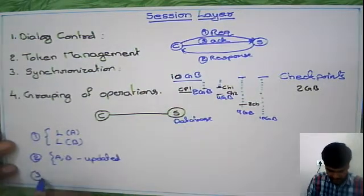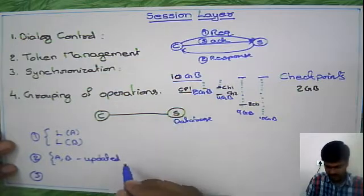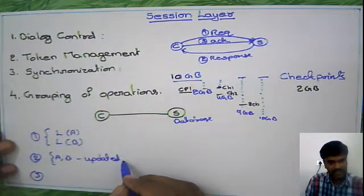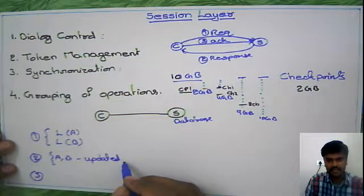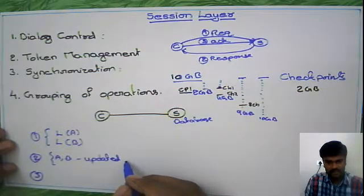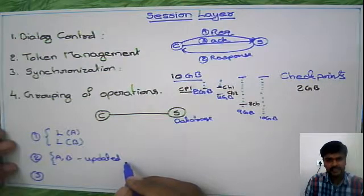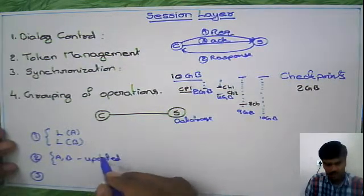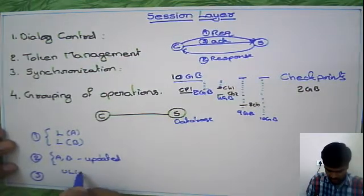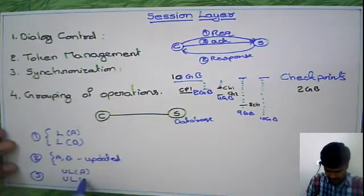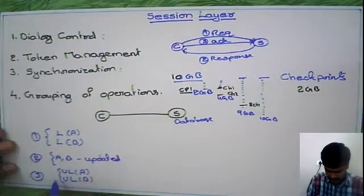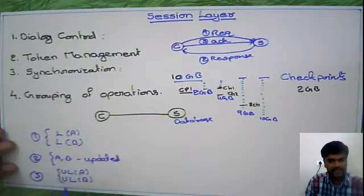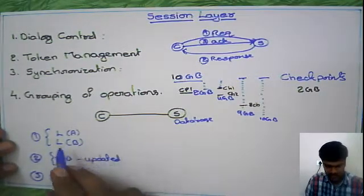Finally, you locked this one, after your work is over you have to unlock so that other clients, whoever want to access that data, will be able to access A and B. So you are unlocking A, you are unlocking B. This is the third packet you are sending.